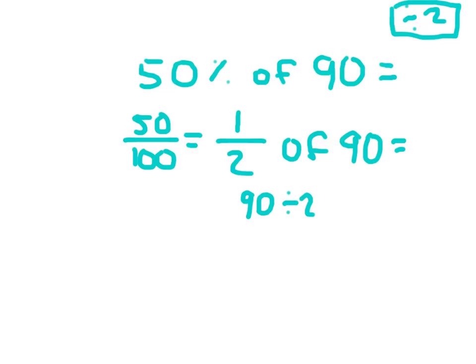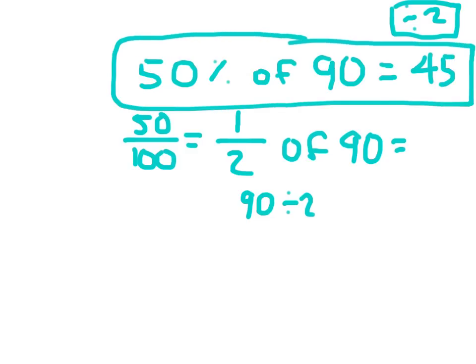So if something is half off at the store, you just divide by 2 and you would figure out how much you would pay. 50% of 90 then is 45.